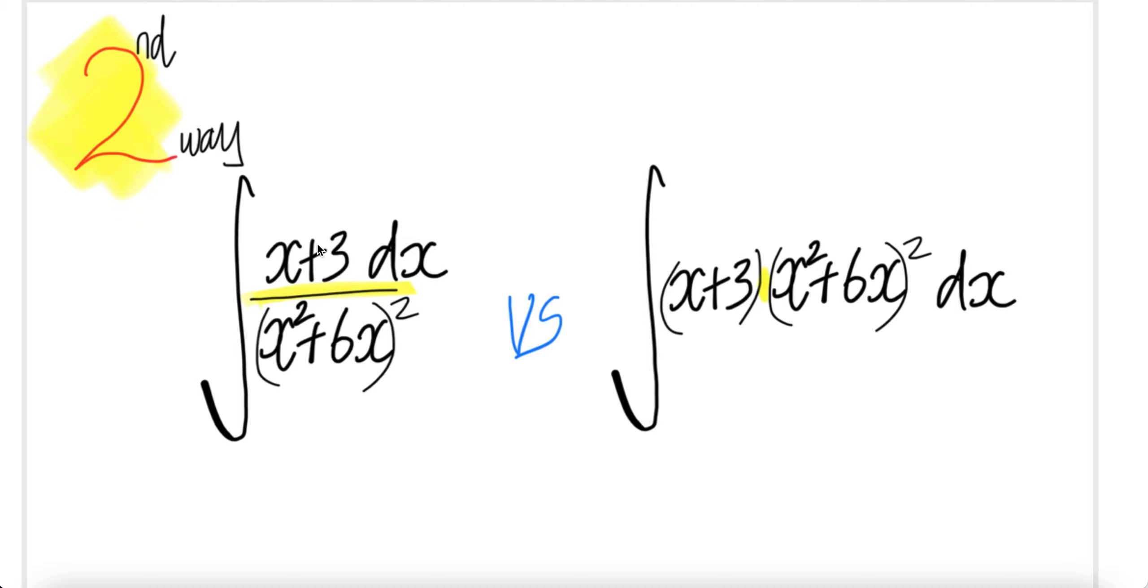Let us look at integral x plus 3 divided by x squared plus 6x whole thing squared versus integral of x plus 3 times x squared plus 6x to the power of square. They are kind of similar. The only difference is one is the division, the other is multiplication.